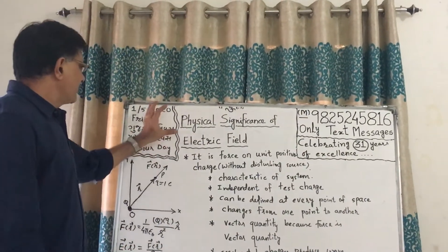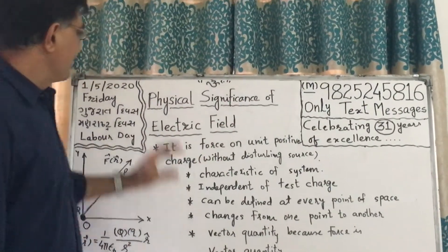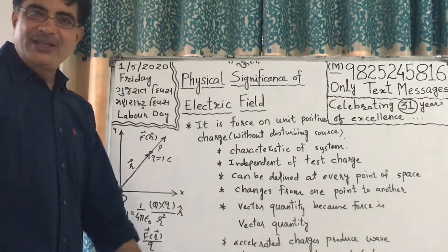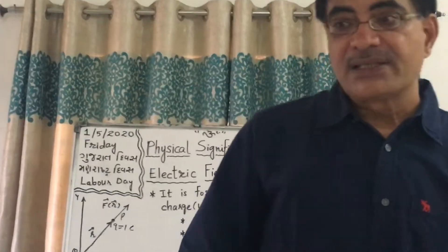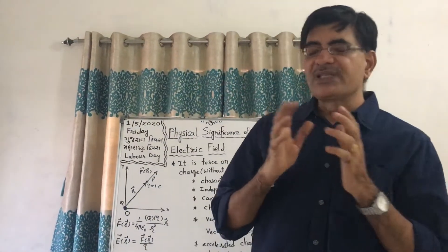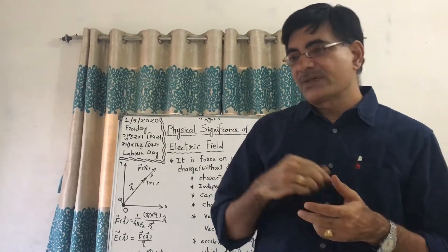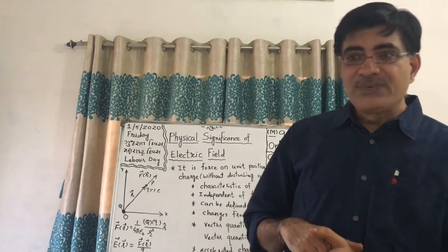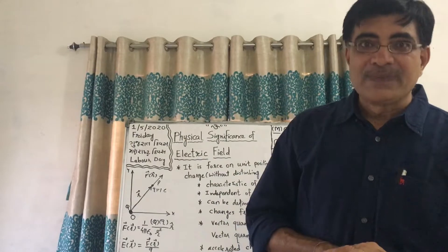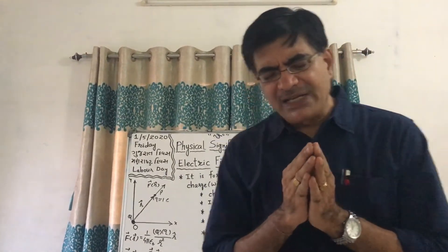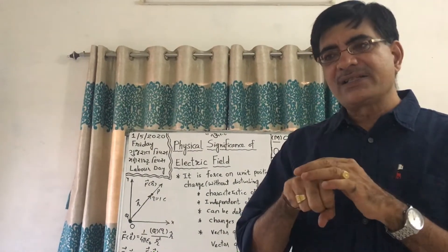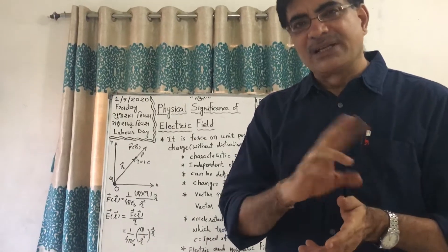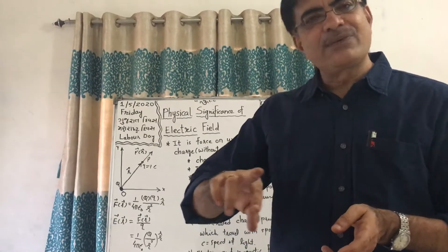Today's topic is the physical significance of electric field. Here are the points, but first a quick revision from which we can derive these points. What is physical significance? Electric field is a concept given by Faraday. It is not visible — we cannot see the electric field surrounding us, just as you cannot see sound. How can we physically experience it? That is called physical significance. Electric field is the effect of a charge in a certain area surrounding it, and it is measured in terms of electric field intensity. Both can be considered similar, because electric field can only be described using electric field intensity.